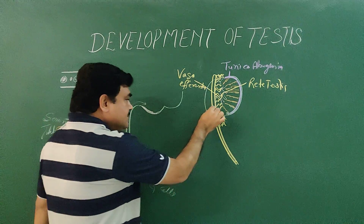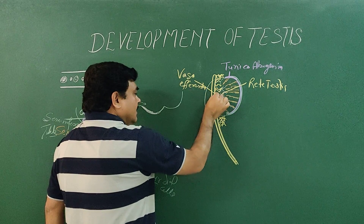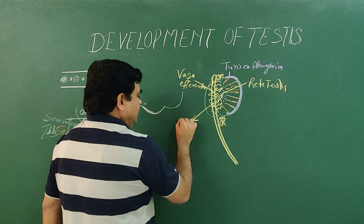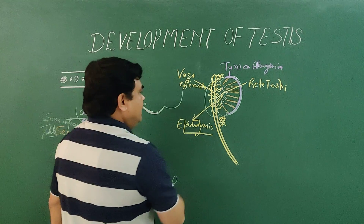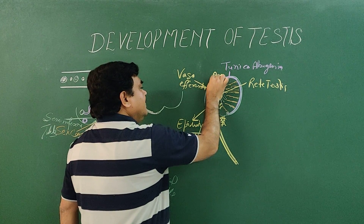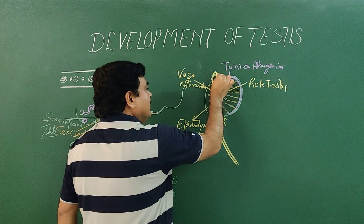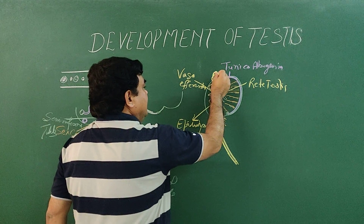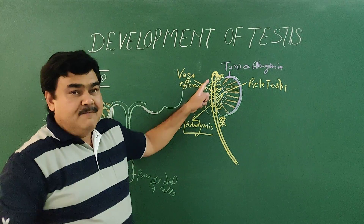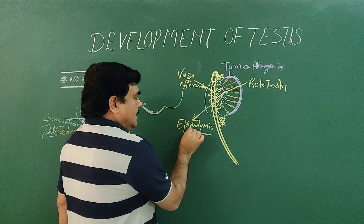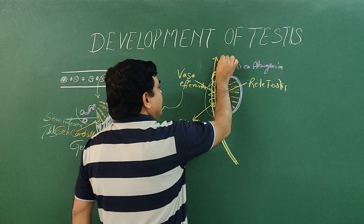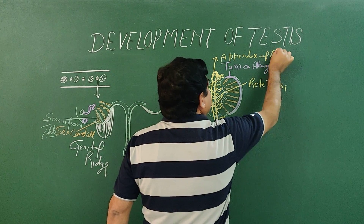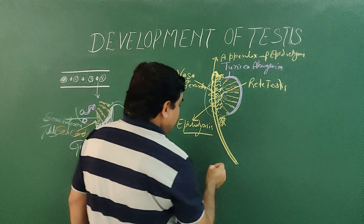The vasa efferentia formed by upper mesonephric tubules join with the mesonephric duct. The upper part of the mesonephric duct is highly coiled and forms the epididymis. The cranial part of the mesonephric duct where no ductules are connected persists above the head of the epididymis and is known as the appendix of the epididymis.